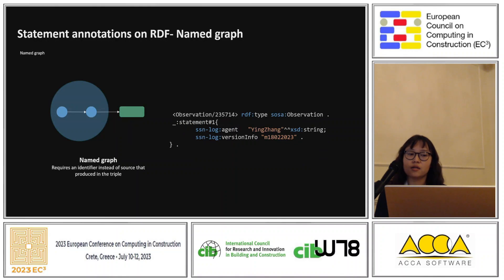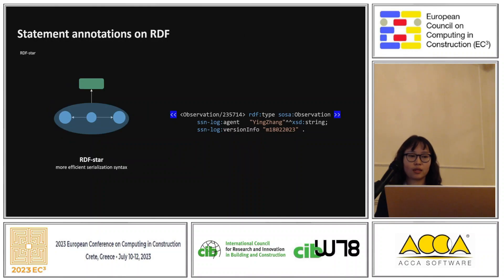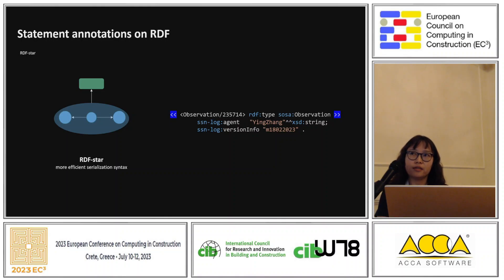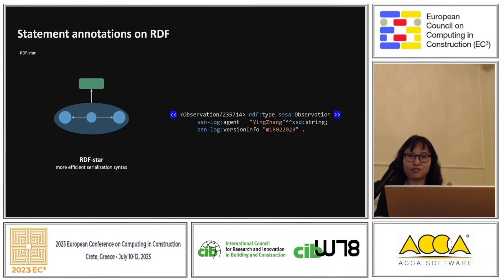The second approach is the named graph, which requires an external identifier but can add graph-level annotation on RDF. In order to store and express our contextual data catalog more efficiently, we chose the RDF-star syntax, which is more concise, for our research.